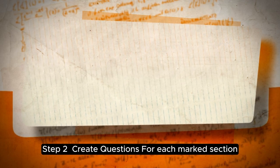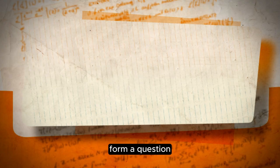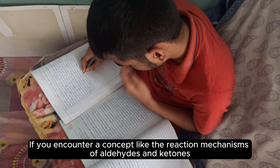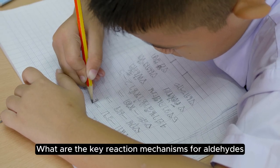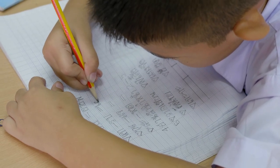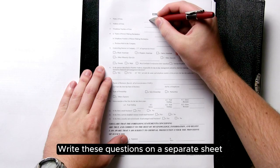Step 2: Create questions for each marked section. Form a question. If you encounter a concept like the reaction mechanisms of aldehydes and ketones, turn it into a question. What are the key reaction mechanisms for aldehydes? Write these questions on a separate sheet.